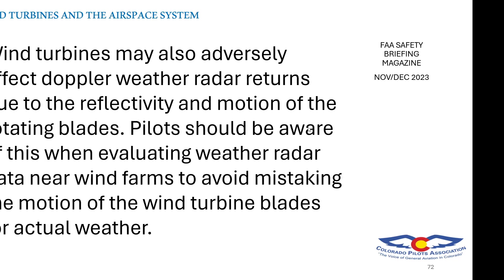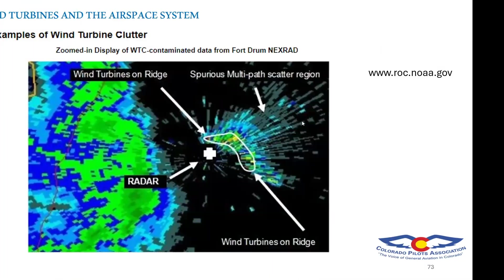Wind turbines may also adversely affect Doppler weather radar returns due to the reflectivity and motion of the rotating blades. Pilots should be aware of this when evaluating weather radar data near wind farms, to avoid mistaking turbine blade motion for actual weather. A NOAA diagram shows spurious multi-path scatter: radar hits the turbine blades and disperses the reading across the region. So if you're doing NEXRAD radar, be careful that turbine blades aren't giving you a false indication.